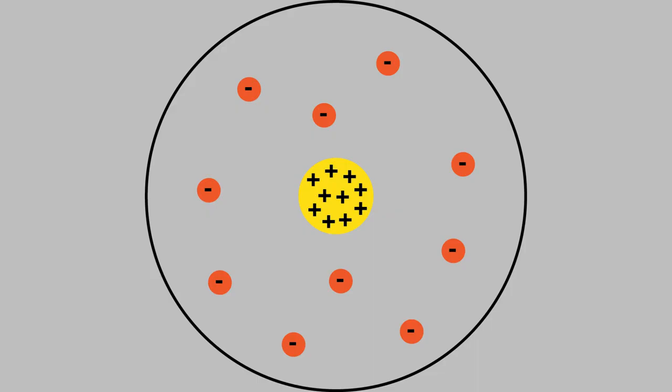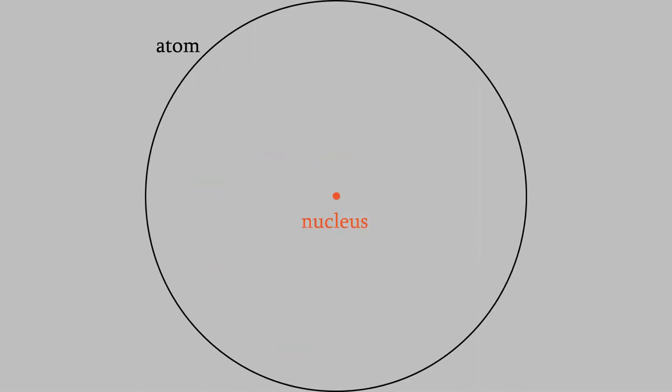This gave us a much more realistic picture of an atom. The positive charge in an atom isn't spread out. Instead, it's concentrated in a nucleus in the center, with the much lighter electrons swirling around it. And compared to the whole atom, the nucleus is very tiny. In the case of hydrogen, the width of a nucleus is just about one ten-thousandth of the width of the whole atom.